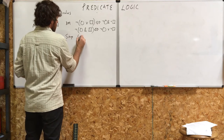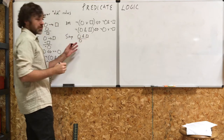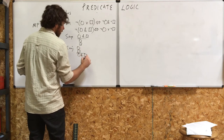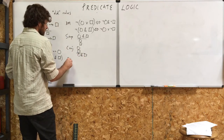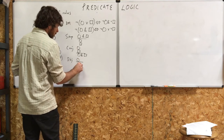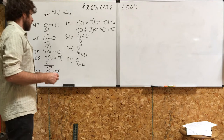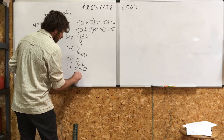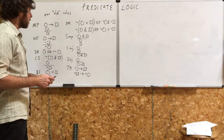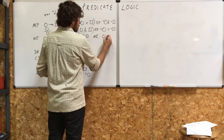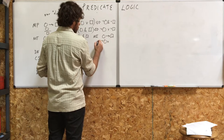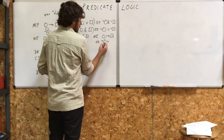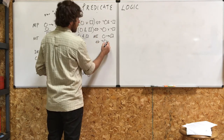Simplification: if you have circle and square, you can derive circle, or you can also derive square. Conjunction: if you have circle and square, you can derive circle and square, or the other order, square and circle. Disjunction: if you have circle, you can derive circle or square. Transposition — also called contraposition: circle arrow square is the same thing as not-square arrow not-circle. MI — material implication: circle arrow square is the same thing as not-circle or square.